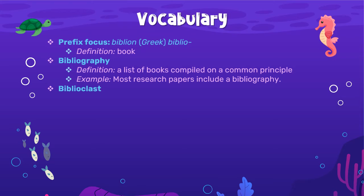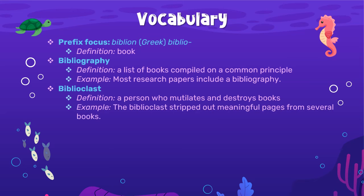Biblioclast — something to do with books. What do you think? That would be a person who mutilates and destroys books. Mutilate means that you mess up and destroy, basically. For example, the biblioclast stripped out meaningful pages from several books.